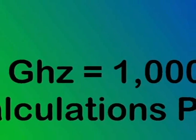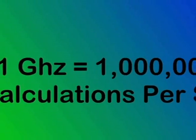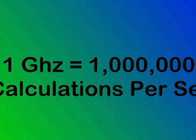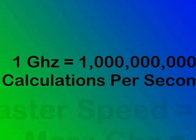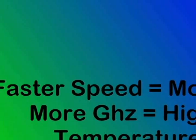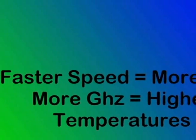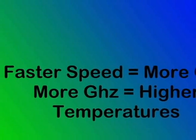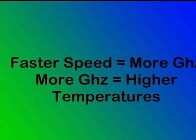A calculation is the math that the computer does to open a program, run a game, move your mouse cursor — anything like that. The faster your computer's speed, the more it can do and the faster it can do it. However, with faster speeds, you get more heat being produced by these chips.